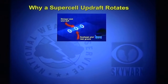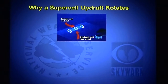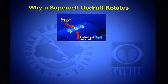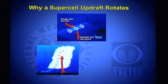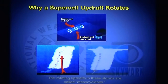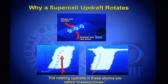Why does a supercell updraft rotate? Well, the wind shear — especially direction shear — means wind speeds and directions are changing as we go up through the storm, so we get what's called horizontal rolls forming. That's wind moving parallel to the ground in a horizontal fashion because of the difference in wind direction with height. These horizontal rolls run into the thunderstorm, and the updraft pulls the horizontal roll upward into the storm while the downdraft pulls it down to the ground. If the circulation reaches the ground, that's a tornado.